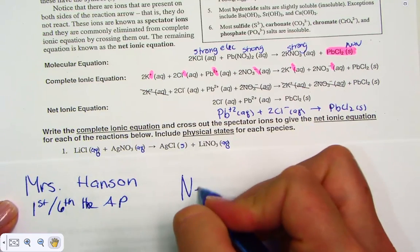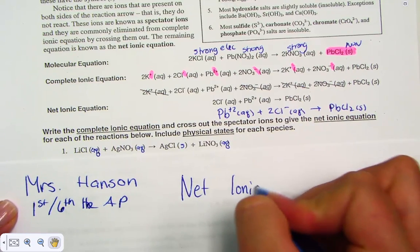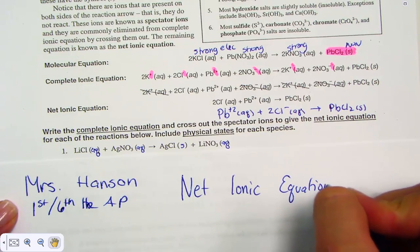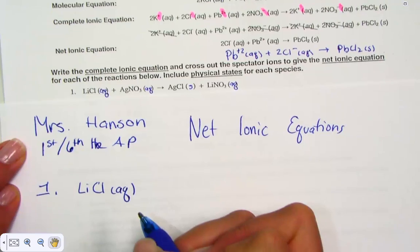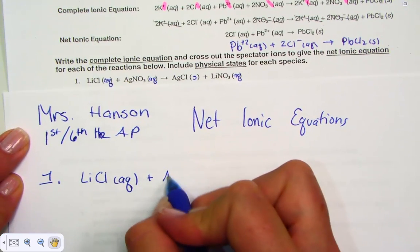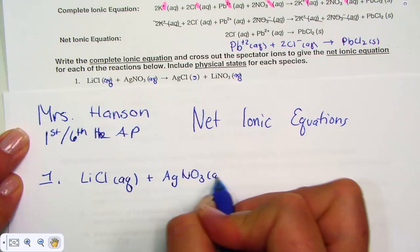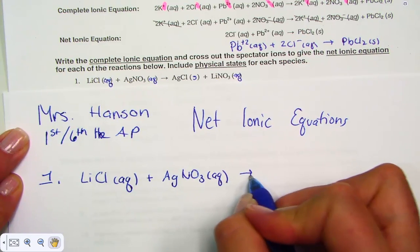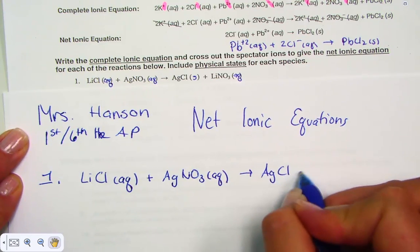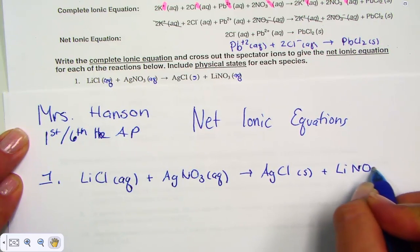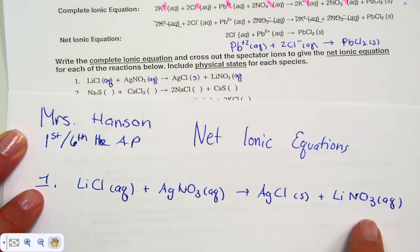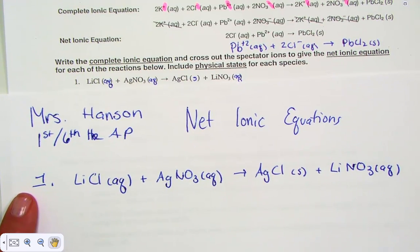We're writing out our net ionic equations. You may have some lined paper out to do the same. Equation one, I'll recopy LiCl, which we decided was aqueous, reacting with silver nitrate aqueous, forming AgCl—there's the solid—and LiNO3 aqueous. This is our molecular equation from number one.